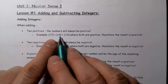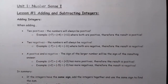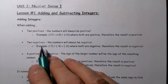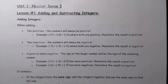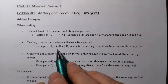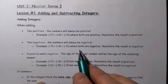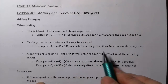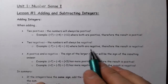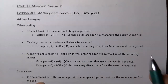We're starting with two positive values and we're going to end up with a positive value. Now if you've got two negatives, the result will always be negative. If I add a negative seven to a negative four, I'm going to get negative 11. Both are negative, so the result is going to be negative.